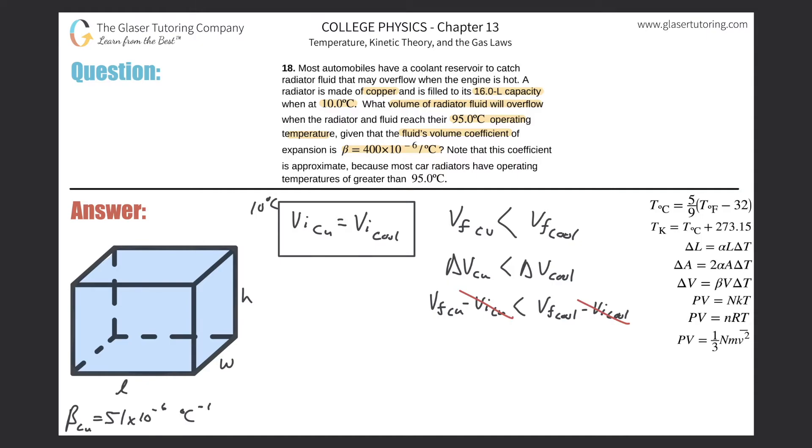So basically all I need to do now, as I was stating before, is that the amount of overflow will be equal to, we know that it's going to be the larger volume minus the smaller volume. In other words, it'll be the change in volume of the coolant minus the change in volume of that copper box.